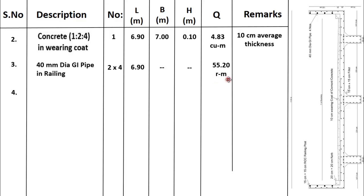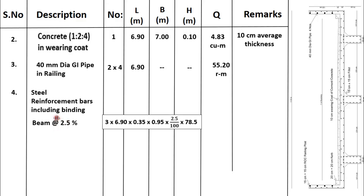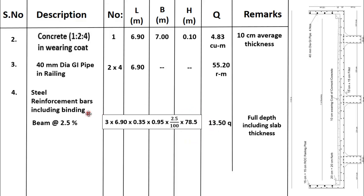The fourth and last item of work is steel reinforcement bars including binding. First, we will calculate quantity of steel for the beam, which is 2.5% of the total volume of beam. The number of beams is 3, length is 6.90 m, width is 0.35 m, and the full depth of beam including slab thickness is 0.95 m (beam depth 75 cm plus slab 20 cm). Multiplying: 3 × 6.90 × 0.35 × 0.95 × 2.5% × 78.5 gives the quantity of steel for beams as 13.50 quintal. Note: 1 quintal equals 100 kilograms, and 1 ton equals 10 quintal.